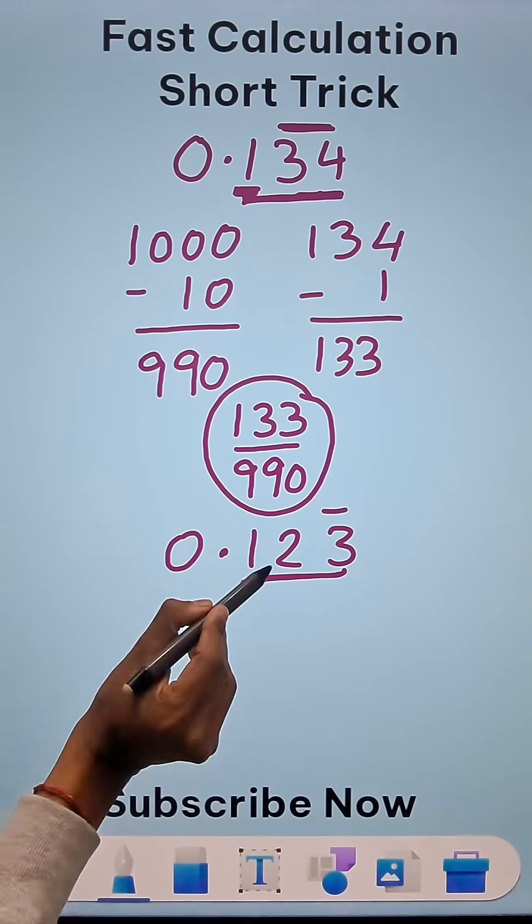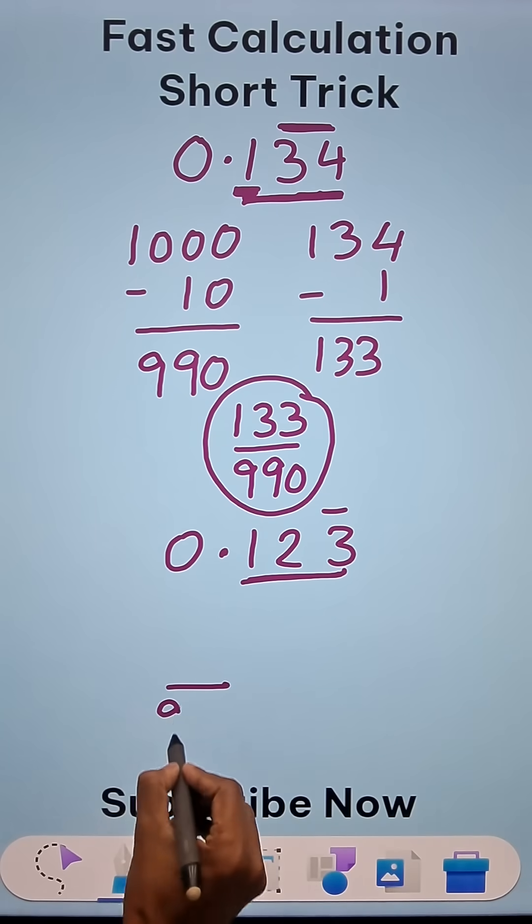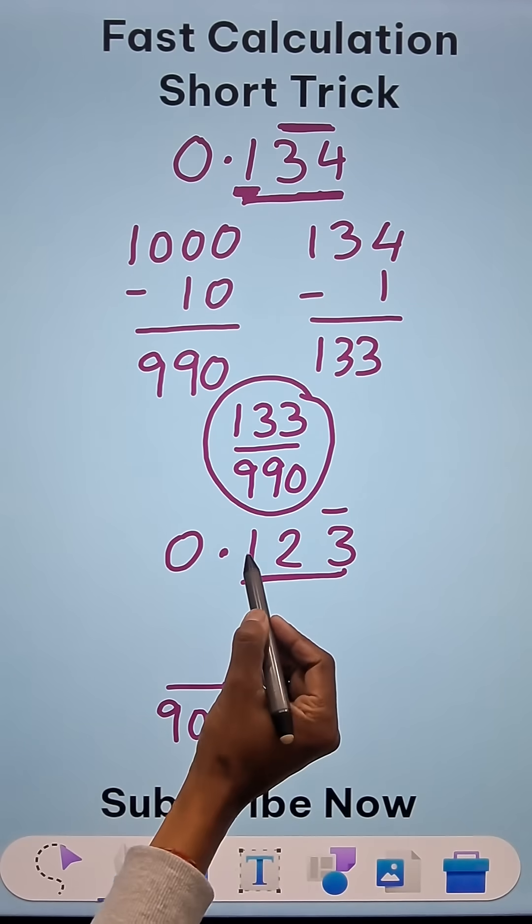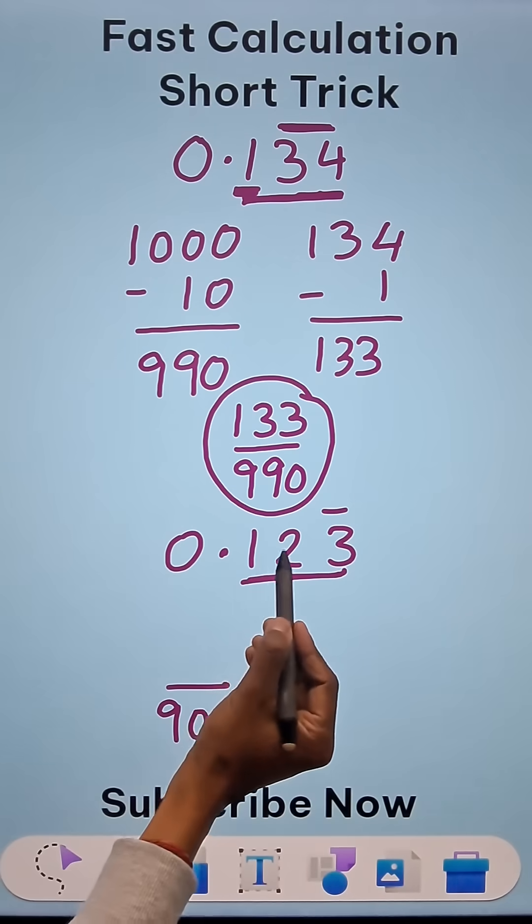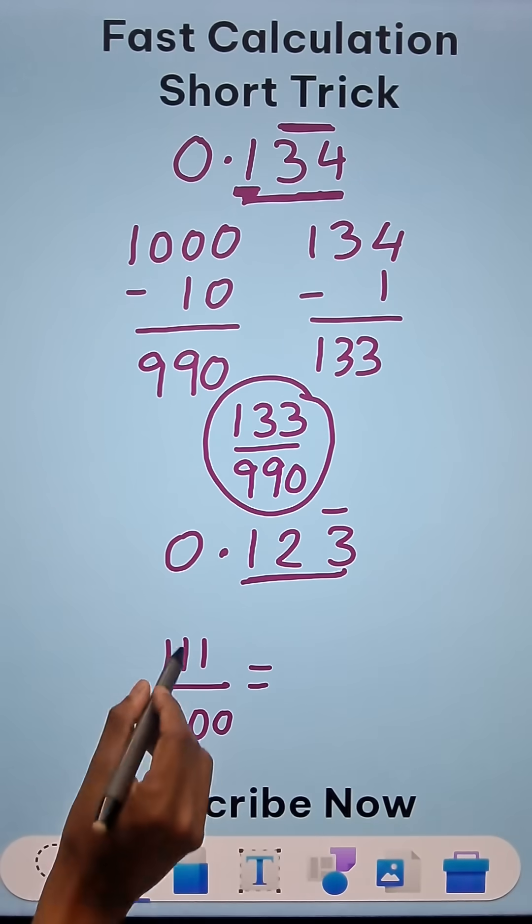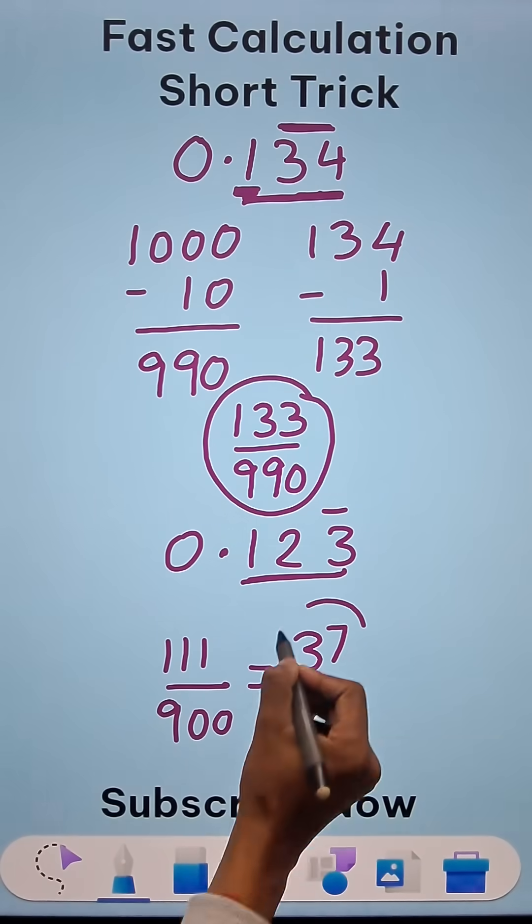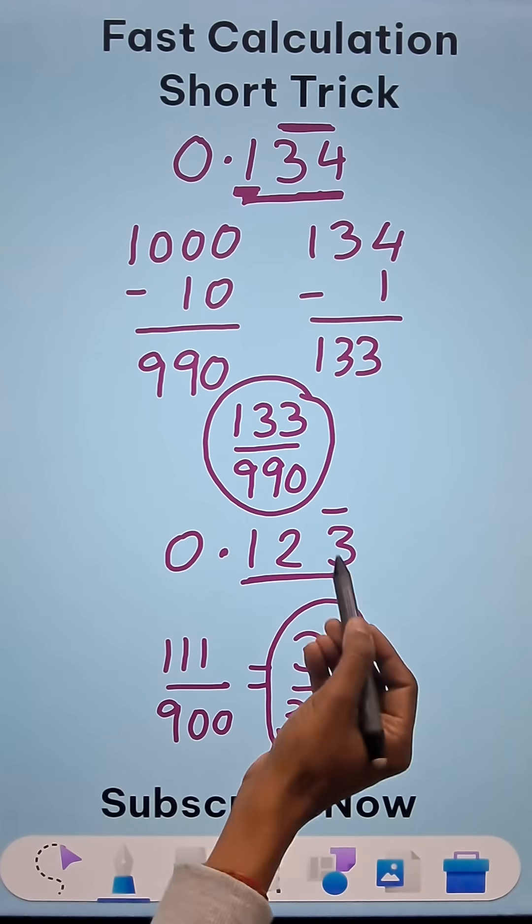So 1000 minus 100 this time will give us 900. So in the denominator, we will have 900 and in the numerator, 123 minus 12 will give us triple 1 and the lowest form for this is 37 over 300. And this is the rational representation of 0.123 bar.